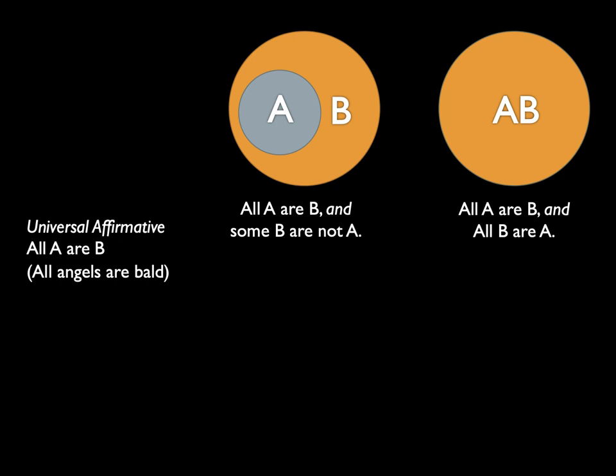Using the example "all angels are bald," there are two ways that can be diagrammed. The left-hand circle diagram shows smaller A contained within bigger B — depicting all angels are bald, and some bald things are not angels. The right circle diagram shows all angels are bald and all bald things are angels, where the categories are exactly the same and completely overlapping — there are no angels who are not bald and no bald things that are not angels.